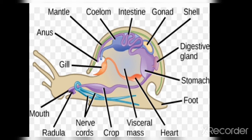Moving on to respiration: gaseous exchange occurs through the gills or through the body surface via the mantle. One important feature to note is that mollusca have a tongue-like structure called the radula. Regarding circulation, they have an open circulatory system, meaning blood flows through open spaces rather than being confined to blood vessels.